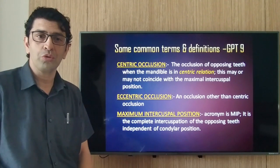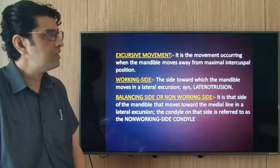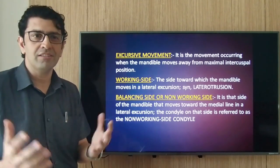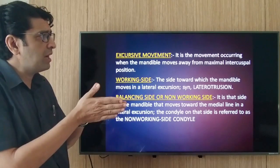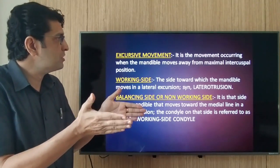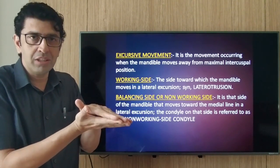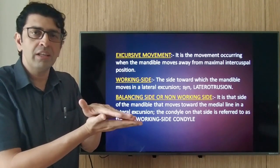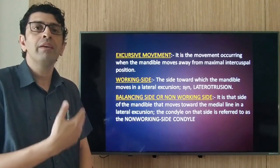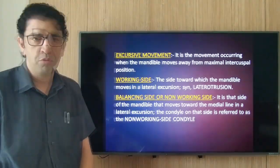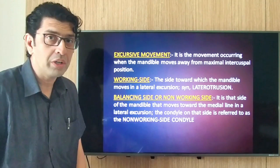Eccentric occlusion is any occlusion other than centric occlusion. Excursive movement is a movement occurring when the mandible moves away from maximum intercuspal position into any other position — that's called eccentric position. When the mandible starts moving out of MIP during chewing or speaking, that is called eccentric movement. Then we have working side and non-working side.